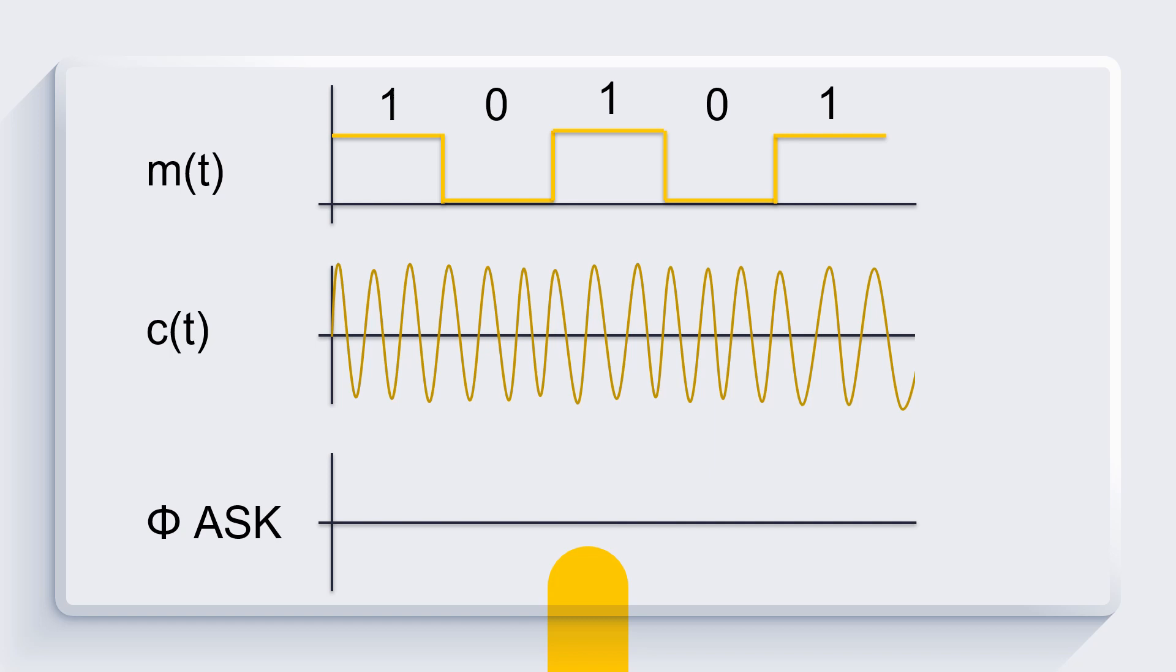The output will be carrier signal f1 if input is 1 and 0 if input is 0. So first, one carrier signal, zero, zero. One carrier signal, zero for zero. And another one for carrier signal.